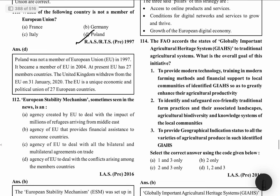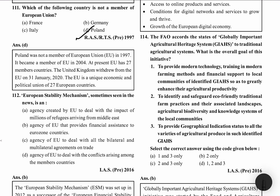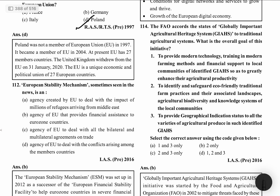The FAO accords the status of Globally Important Agricultural Heritage System, GIAS, to traditional agricultural systems. What is this initiative? The name is the Globally Important Agricultural Heritage System.